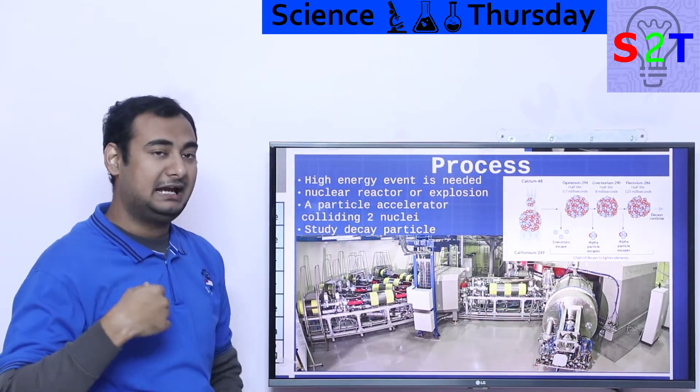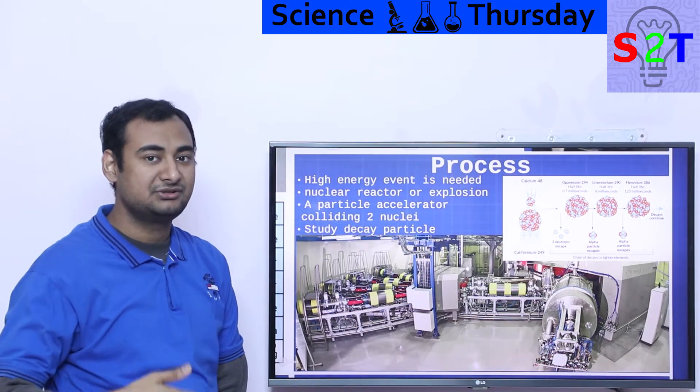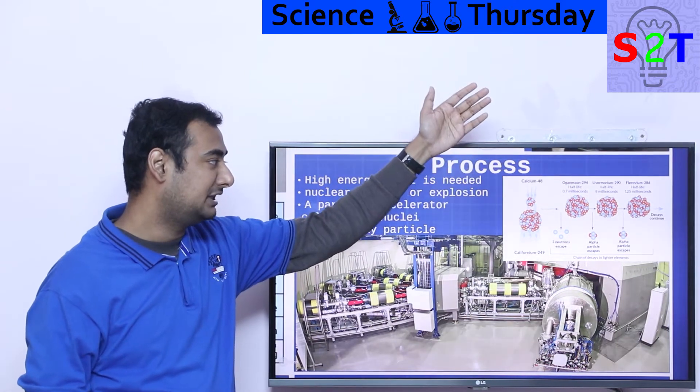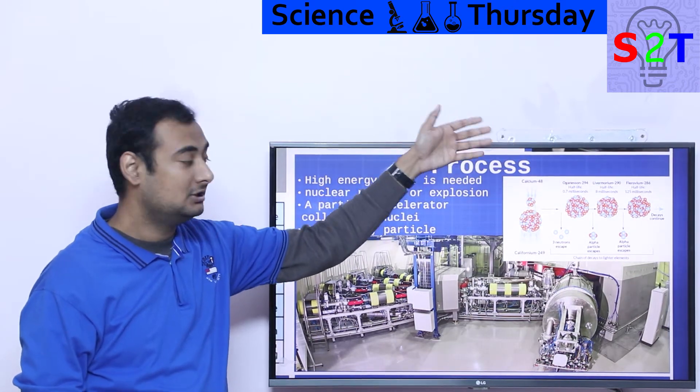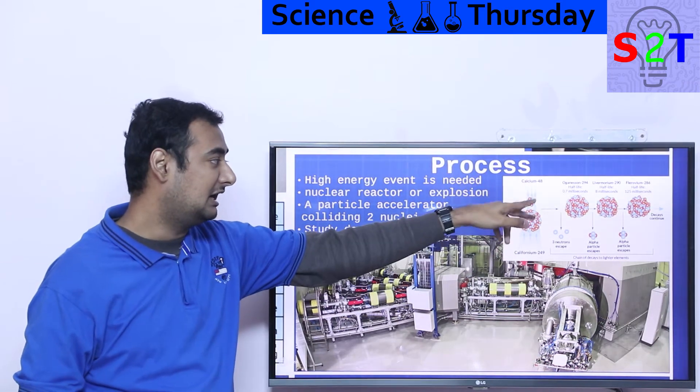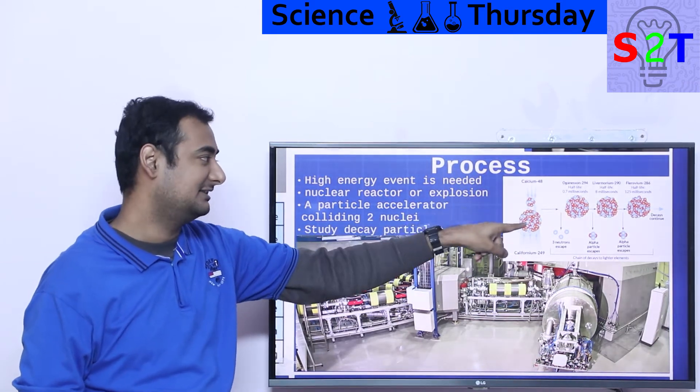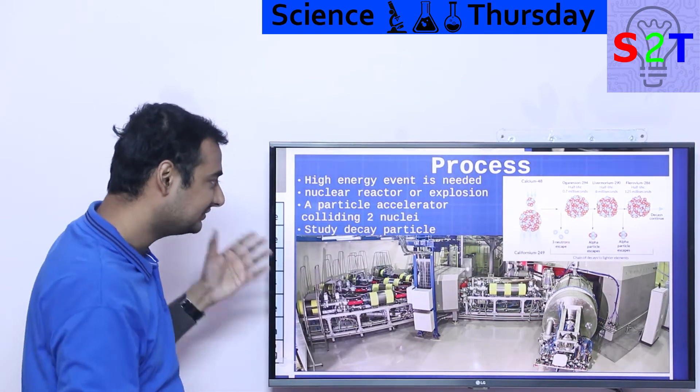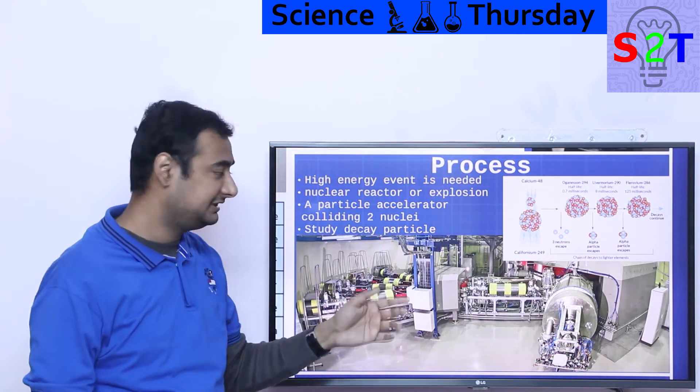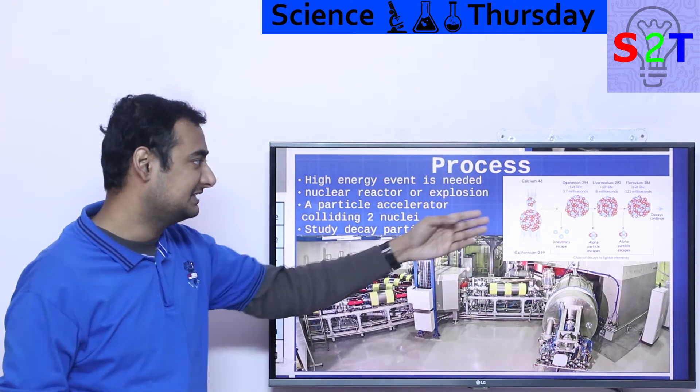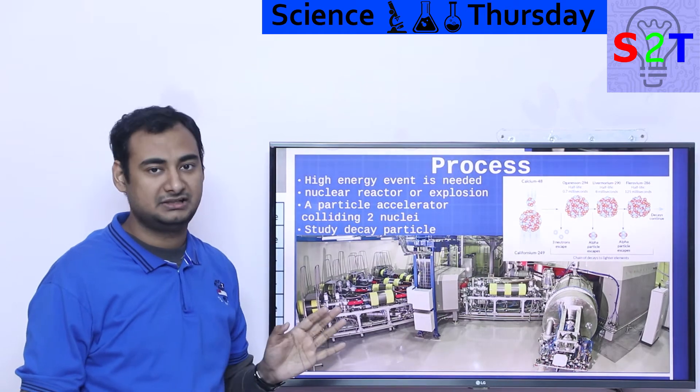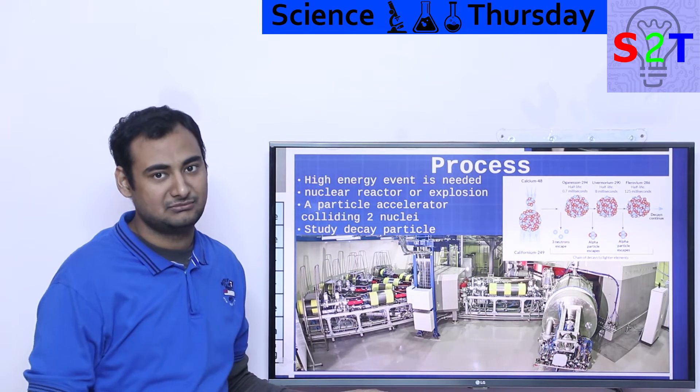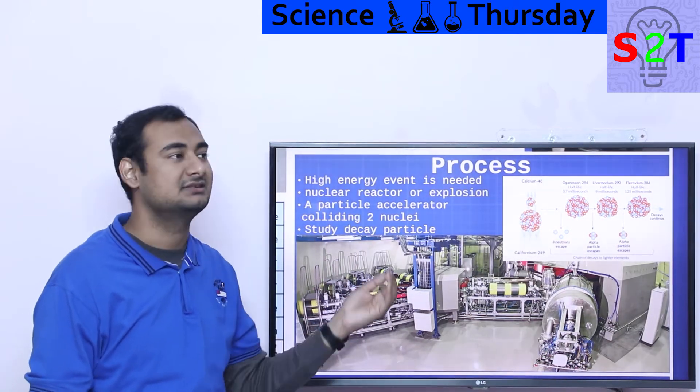You hope, you pray, you bombard it to your full potential and hope that nucleus-on-nucleus event happens and they bond. Here comes the second problem: the moment you are talking about heavy elements like oganesson that is 294, livermorium that is 290, and fermium that is 286, all these things happen in a fraction of a second. Half-lives are 0.7 millisecond, 8 millisecond, 125 millisecond. They're not even whole seconds at this point. When you are trying to study these, you have to study the decay - you're never gonna study livermorium itself.